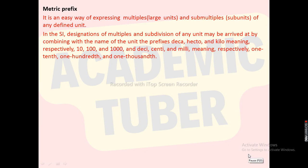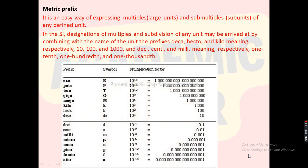Metric prefix: It is an easy way of expressing multiples and sub-multiples of any defined unit. In the SI system, multiples and subdivisions of any unit may be formed by combining the name of the unit with a prefix. The prefixes deca, hecto, and kilo mean respectively ten, hundred, and thousand. The prefixes deci, centi, and milli mean respectively one-tenth, one-hundredth, and one-thousandth. Here are some of the metric prefixes with their symbols and multiplication factors.